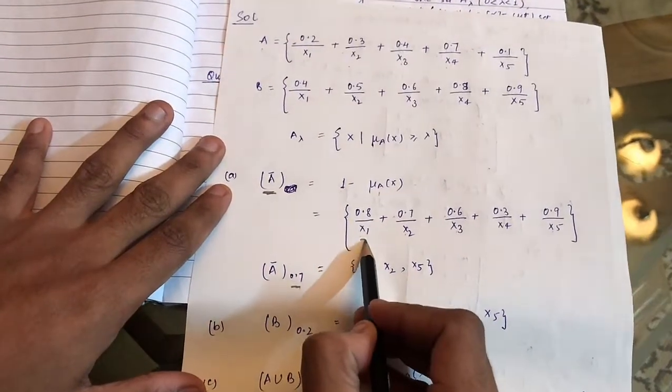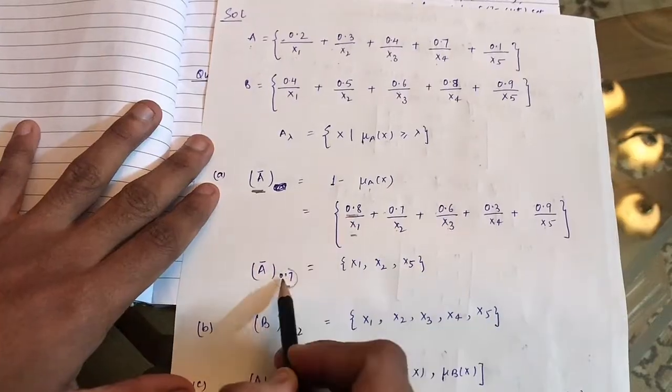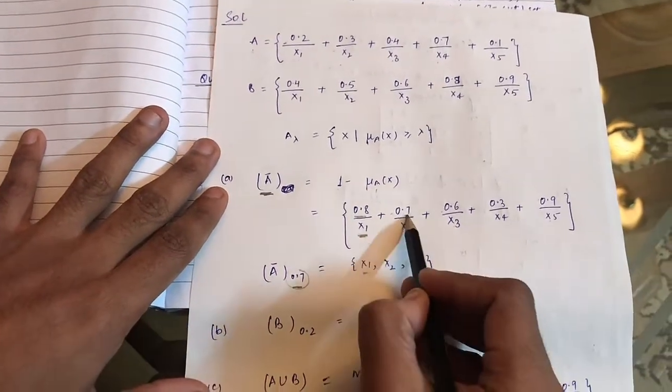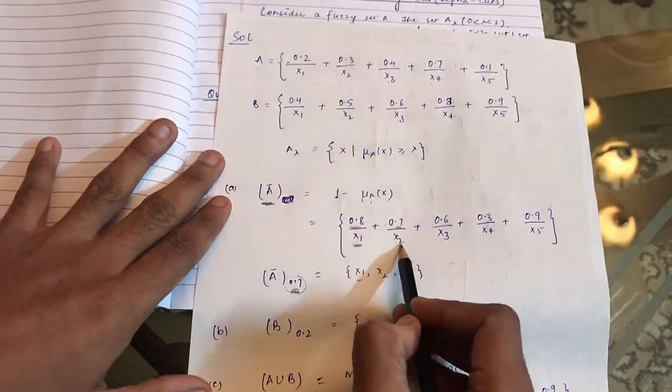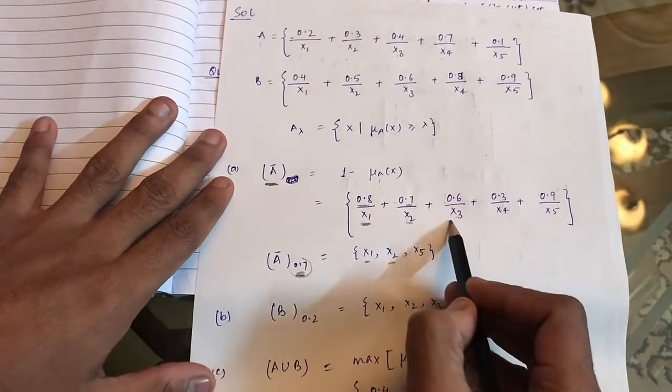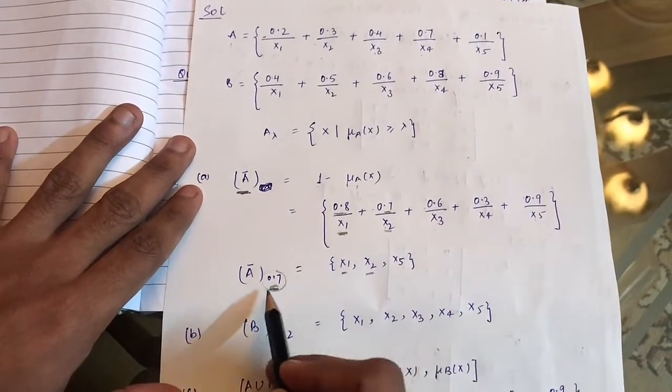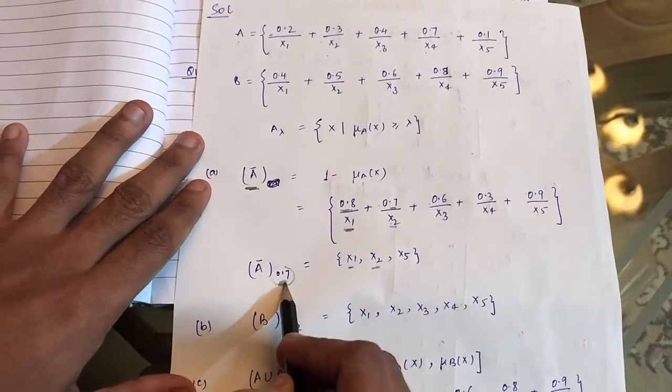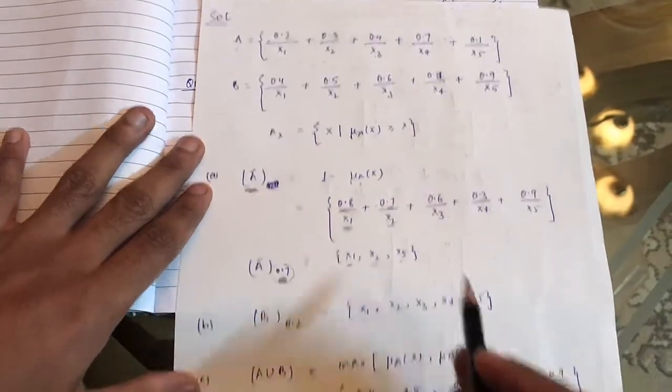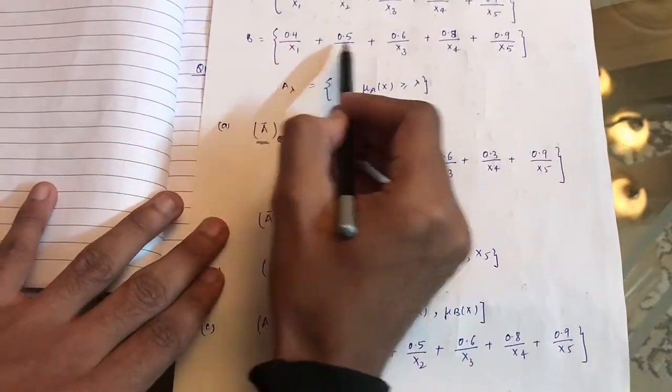Now to find out the lambda cuts for 0.7, we will take only those values which are greater than or equal to 0.7. So 0.8 is greater than 0.7, so x1 we have taken. 0.7 equals 0.7, so we have taken x2. 0.6 is less than 0.7, so we have not taken x3. 0.3 is less than 0.7, so we have not taken x4. But 0.9 is greater than 0.7, so we have taken x5.